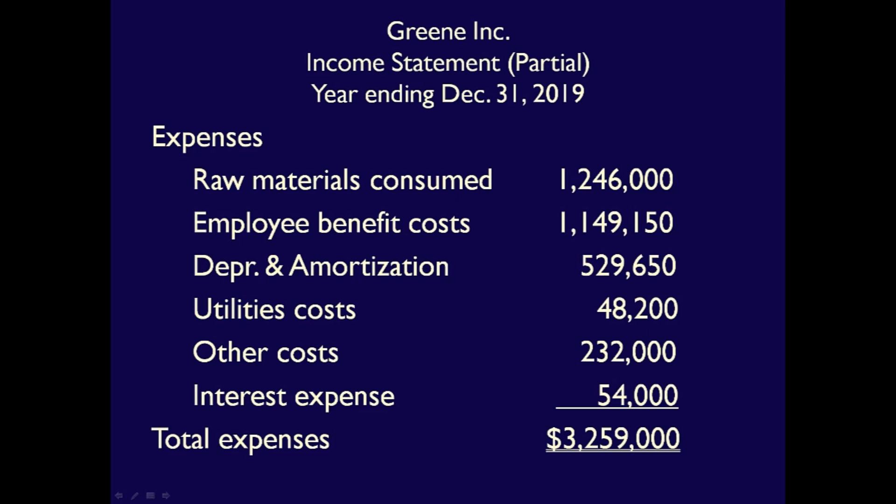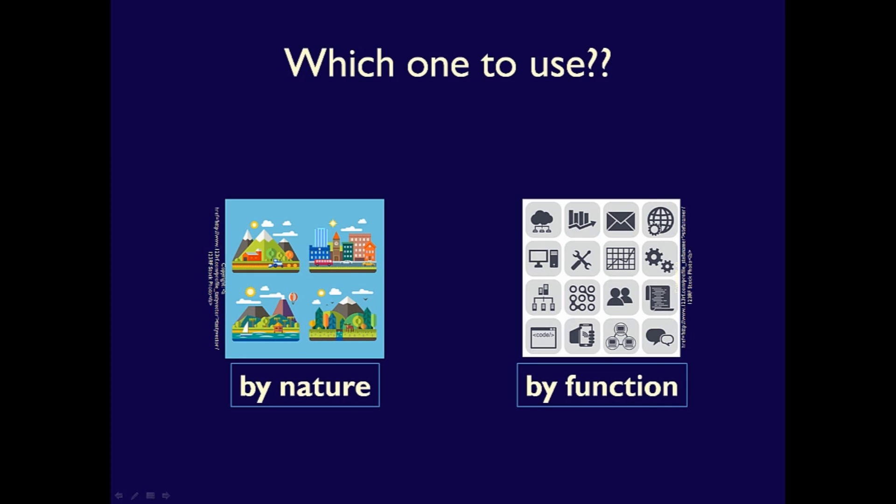Notice that the total of $3,259,000 is exactly the same as the total expenses by function. The expenses are simply categorized using a different method — by function or by nature.